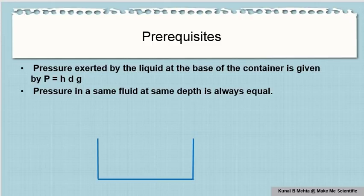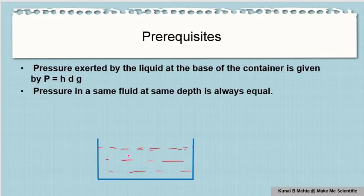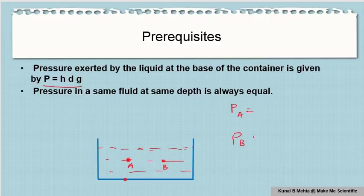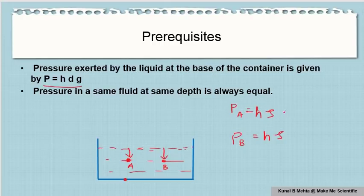Suppose a body is at a depth h inside the liquid. This container is filled with liquid, and the pressure exerted by the liquid at the bottom is given by the expression: pressure is equal to h rho g. Now, given two points A and B inside the same liquid, the depth measured from the free surface is the same for both. So rho is the same, g is also the same. Therefore, pressure at A is equal to pressure at B.